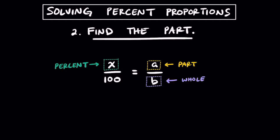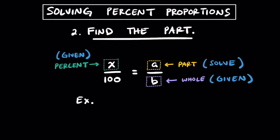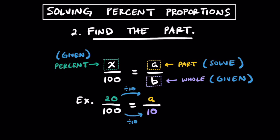The second type of problem is when we're looking for the part. We'll be given the percent (x) and the whole (b), and we'll need to solve for the part, which is a. For example, if we had 20 over 100 is equal to a over 10, then dividing 20 over 100 by 10 on top and bottom, we find that a equals 2. So a equals 2 here — 2 out of 10 is equivalent to 20%.